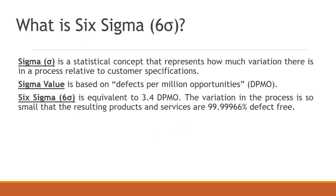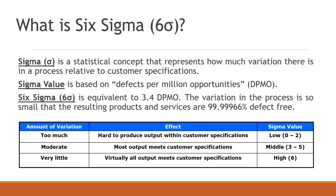Sigma is a statistical concept that represents how much variation there is in a process relative to customer specification. The value of sigma is based on defects per million opportunities, or DPMO. Six sigma is equivalent to 3.4 defects per million operations or opportunities, meaning variations in the process are so small that resulting products and services are 99.9966% defect-free.